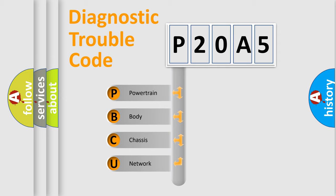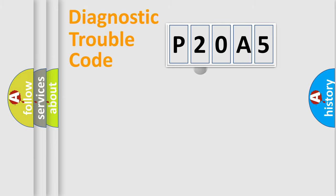We divide the electric system of automobiles into four basic units: powertrain, body, chassis, and network. This distribution is defined in the first character code.